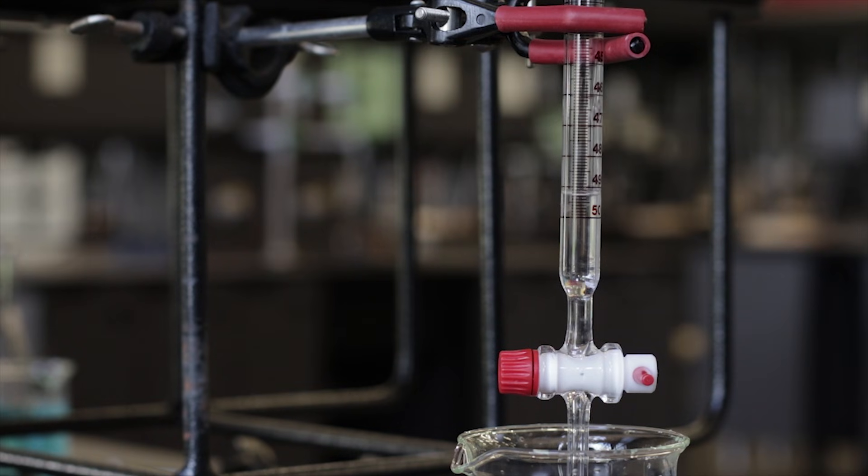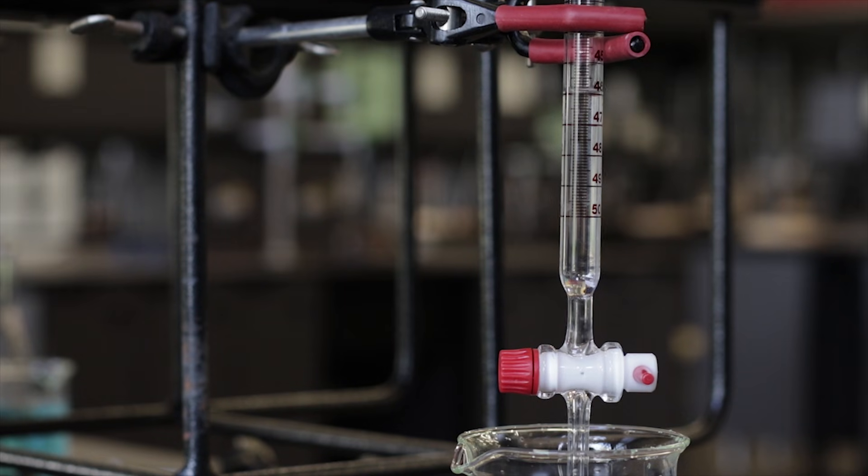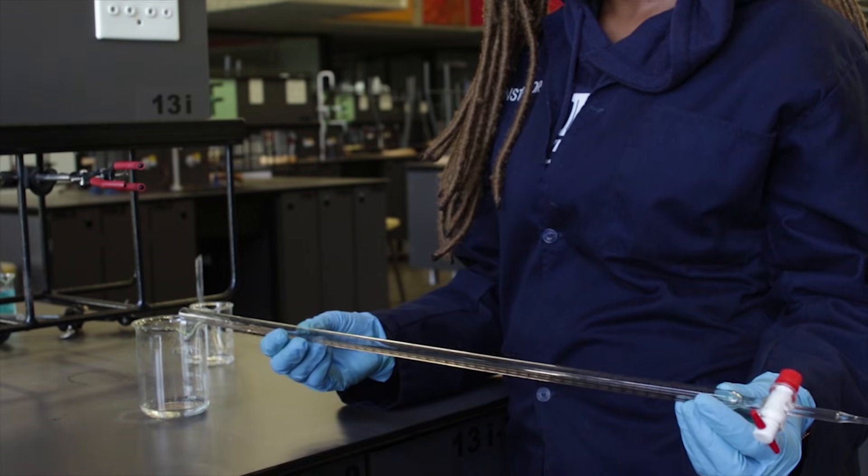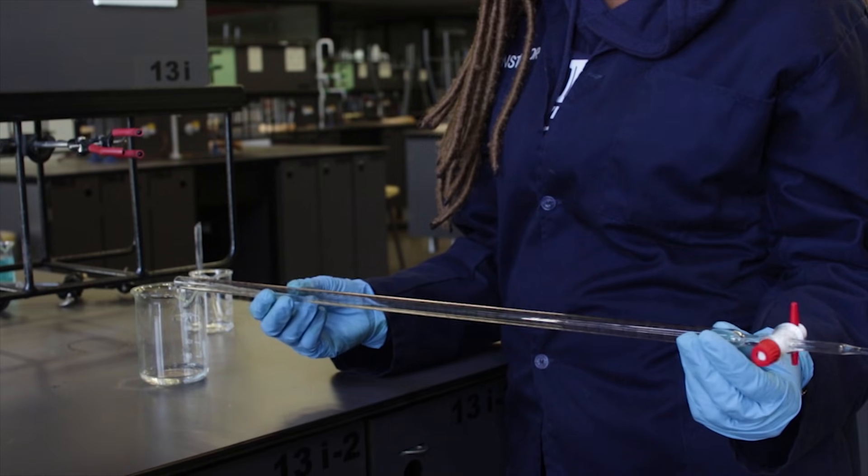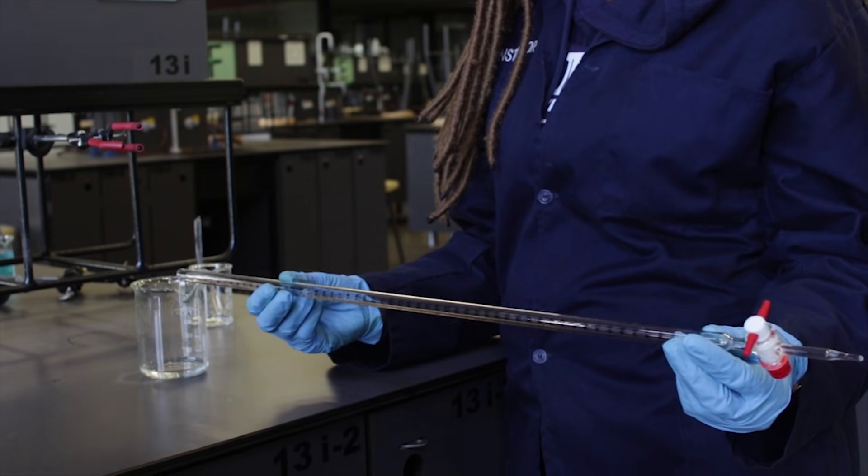This is done by adding approximately 5 milliliters of the titrant into the burette. The burette is then held down nearly horizontal with an empty or waste beaker under the open portion of the top of the burette.